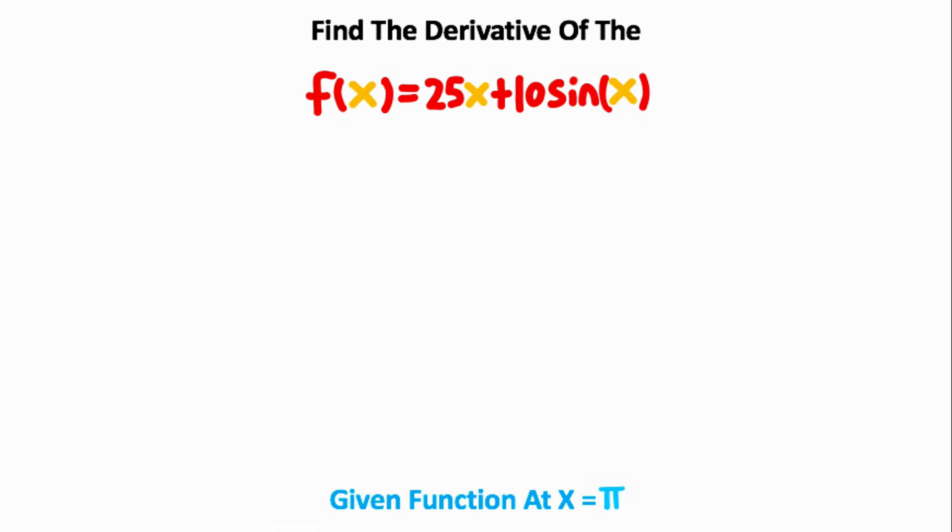So let's say that you're given this function, f of x is equal to 25x plus 10 times the sine of x. We want to calculate the derivative of this function evaluated at pi. Now, to calculate this, I'm first going to find the derivative of the function with respect to x.